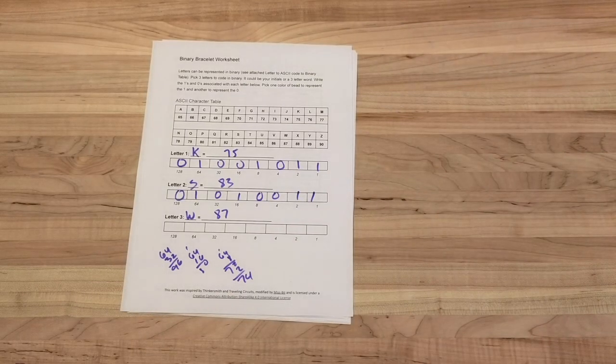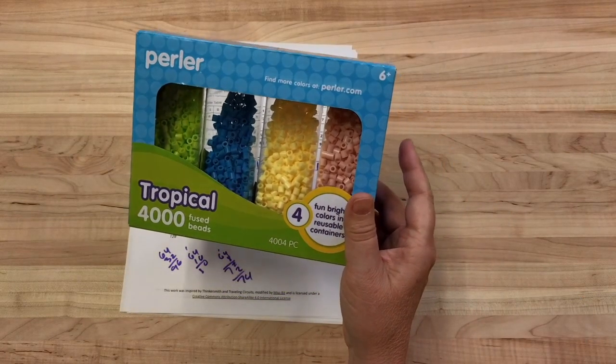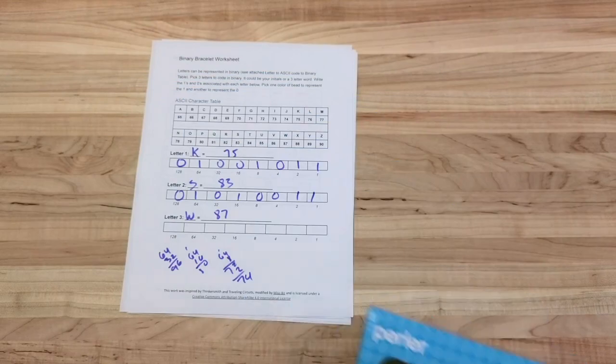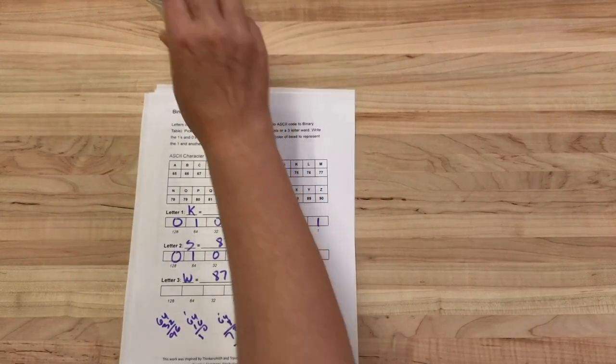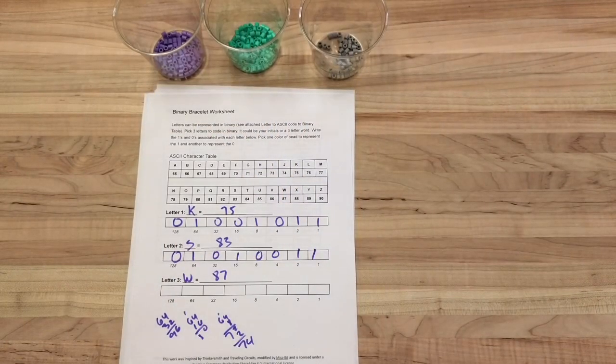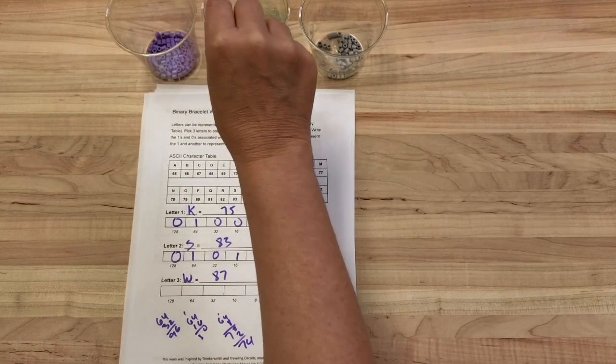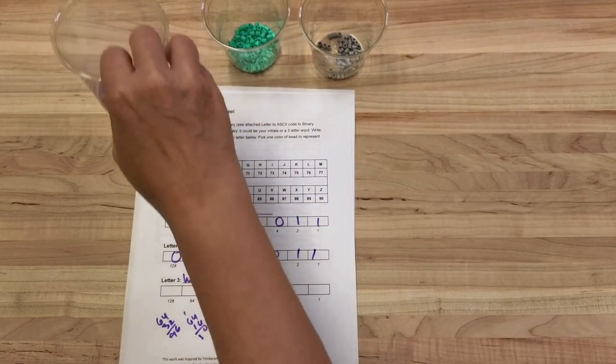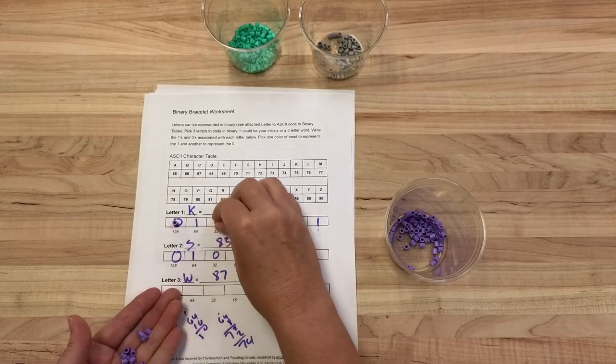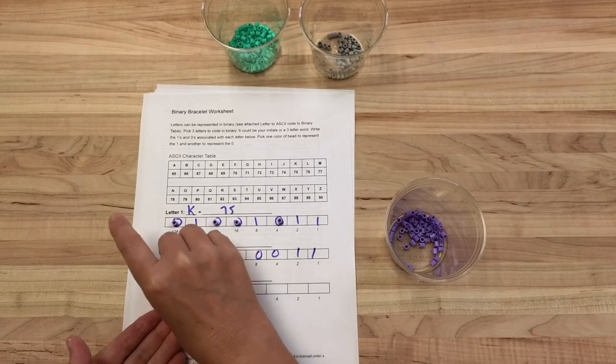The supplies that you need for the binary bracelet activity are perler beads, and I would definitely recommend getting them in separate colors as opposed to bins that have all the colors put together. That's because you're going to want to have them separate for this activity - it's really easier to have them already separated. So I need one of these colors to represent a one and one to represent a zero. I actually think I'm going to have purple represent the zero, so I'm just going to lay them out here on top of my work so it'll be easy to string them together when I get to that part.